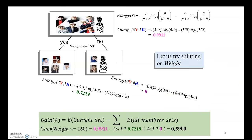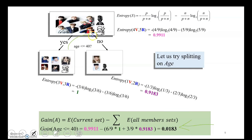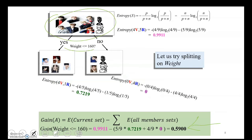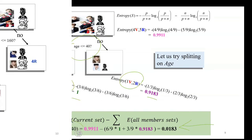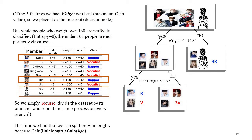Next, we consider splitting based on weight. We want to determine whether weight or hair length should be at the top of the tree. The information gain for weight is 0.59, compared to 0.09 for hair length. Similarly, calculating the entropy and information gain for age gives 0.013. Since weight has the largest gain of 0.59, we place weight at the top of the tree.